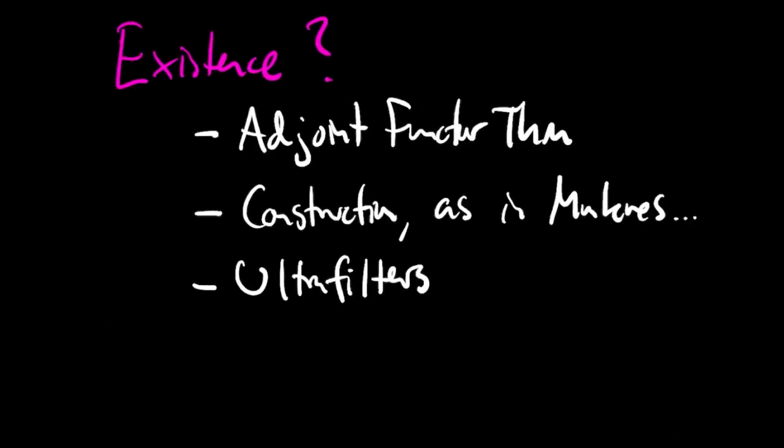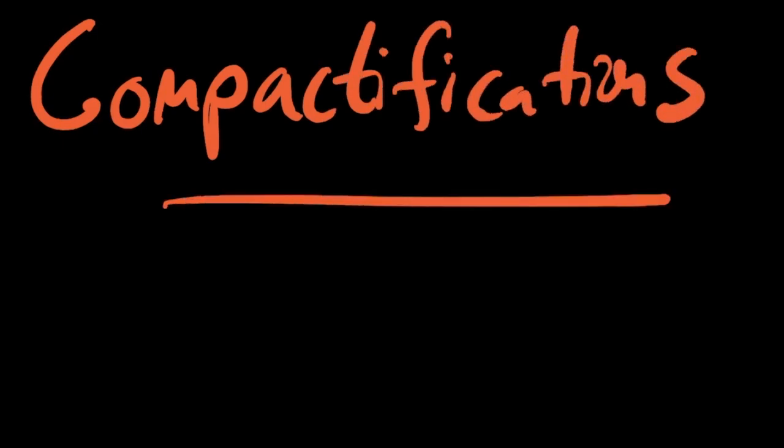It's worth pointing out that there are set-theoretic issues in the existence of the Stone-Čech compactification. I just proved that it implies Tychonoff's theorem, which is known to be equivalent to the axiom of choice. These set-theoretic issues come up in all three arguments for existence: the adjoint functor theorem needs Tychonoff's theorem, Munkres uses the axiom of choice explicitly, and the ultrafilter argument requires the ultrafilter lemma, which is a version of Zorn's lemma. This concludes this video on compactifications — thank you very much for your attention.